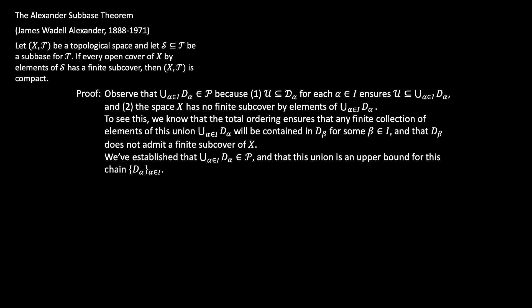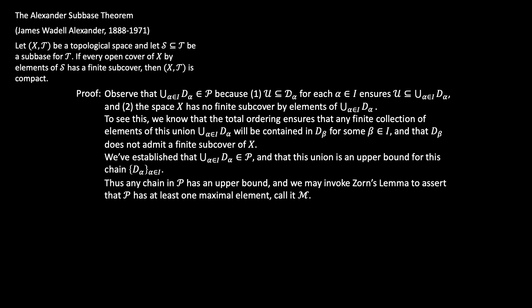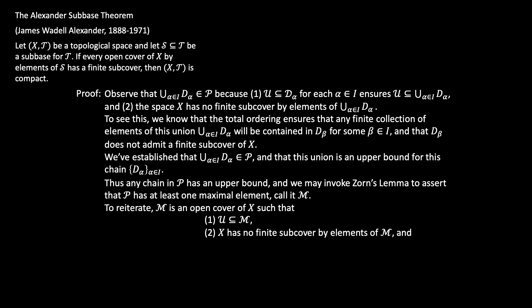We've shown that any chain in P has an upper bound. Now we invoke Zorn's Lemma, which is an equivalent formulation of the axiom of choice, and that allows us to assert that P has at least one maximal element, which we'll call M. To reiterate: M is an open cover of X such that (1) U is contained in M, (2) X has no finite subcover by elements of M, and (3) if script N is another element of P and M is a subset of N, then N must equal M — meaning M is maximal.